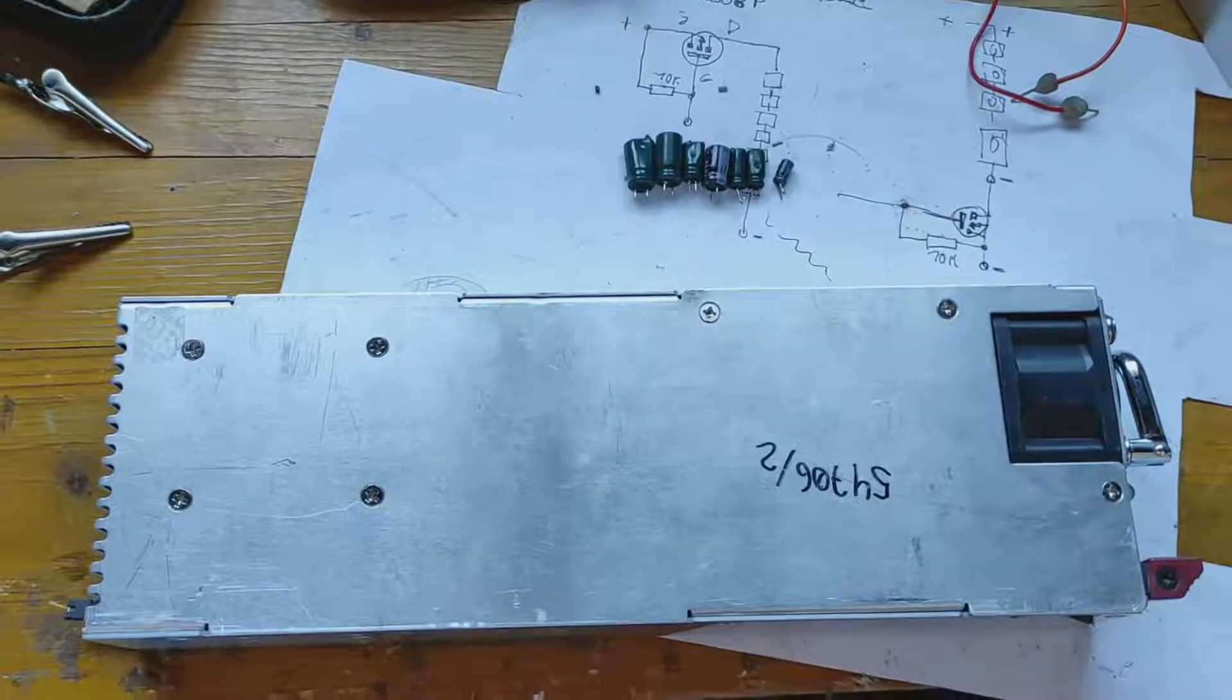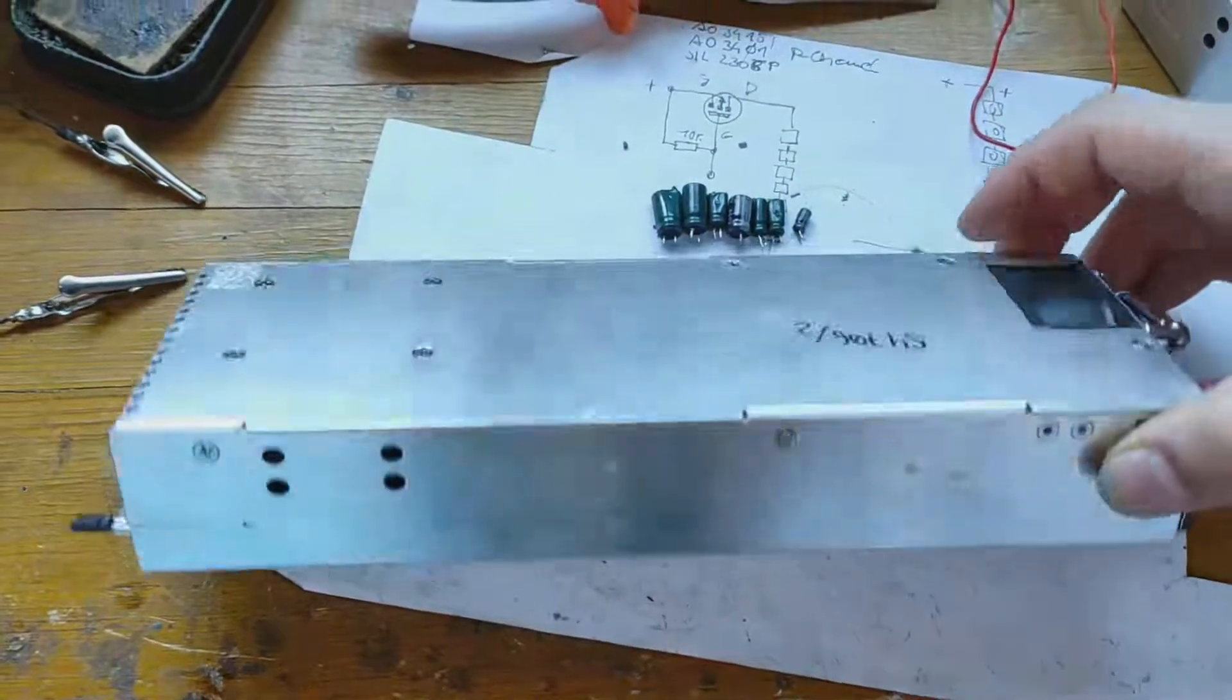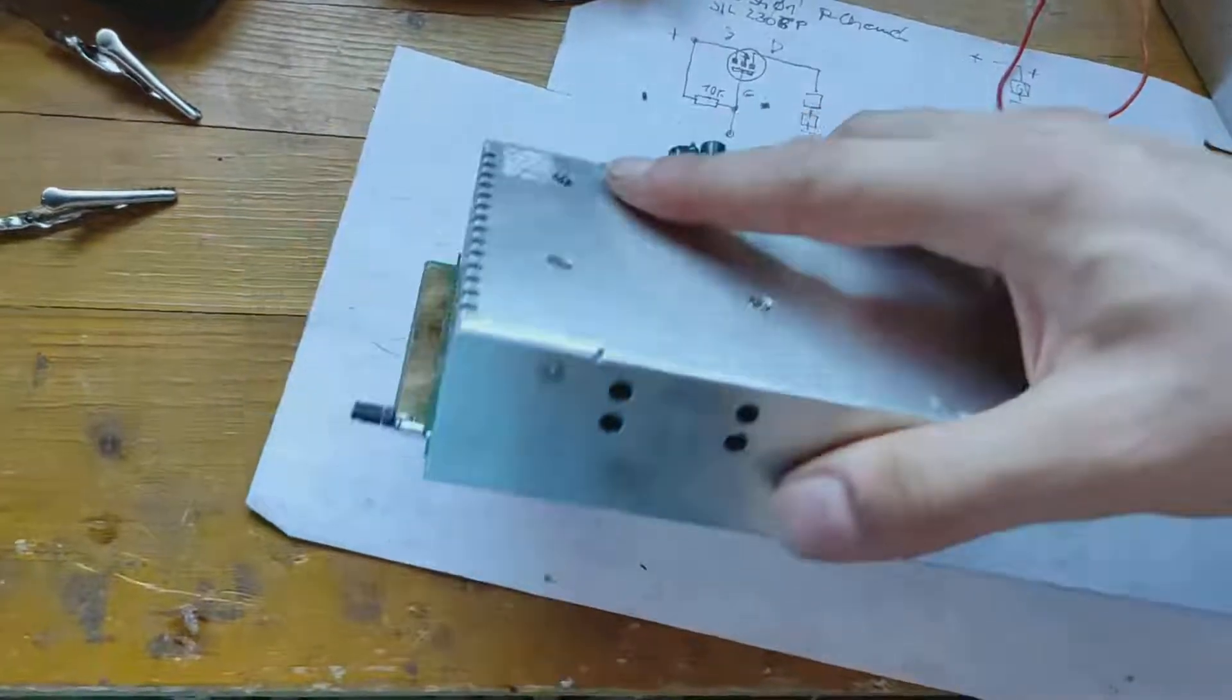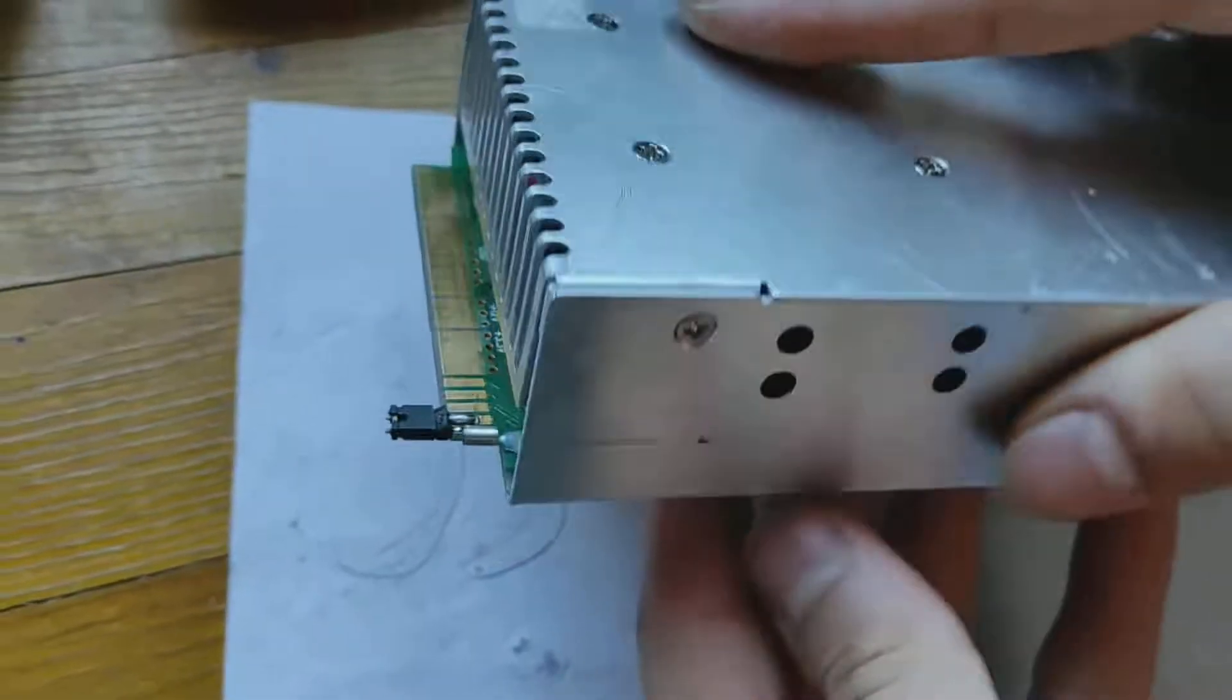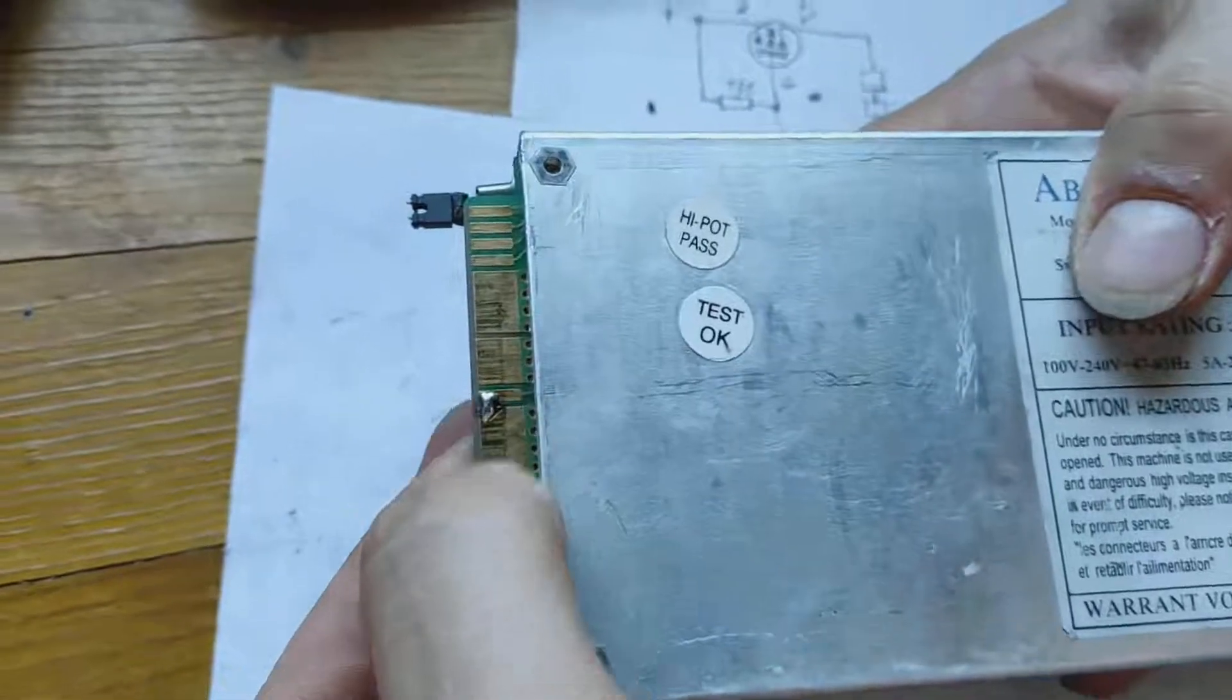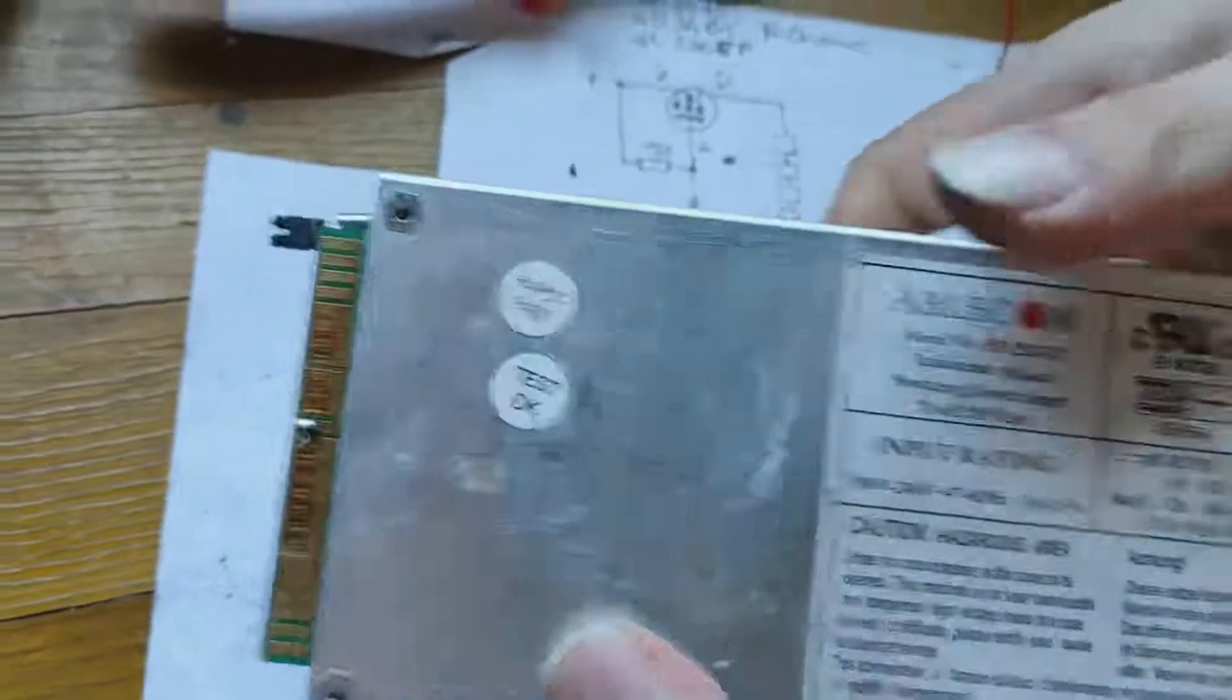After finishing the modification and screwing everything into the case, this is the jumper you can use to start the supply. Very important: this pin here needs to be connected to the ground bar as well, or it's not going to work.